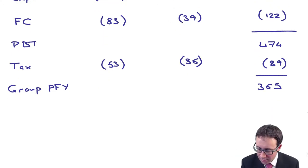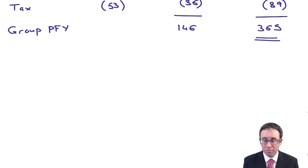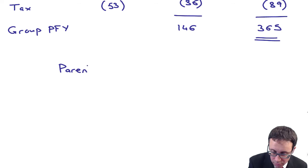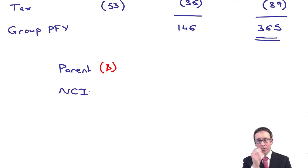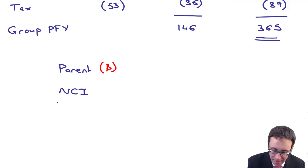Nothing too exciting there. If you total down S's column, because that's important, that's what we need to use to work out our non-controlling interest. So remember, we're going to split that 365 into the amounts that are attributable to the parent, which will be a balancing figure, and amounts which are attributable to the non-controlling interest. That's where the challenge lies.